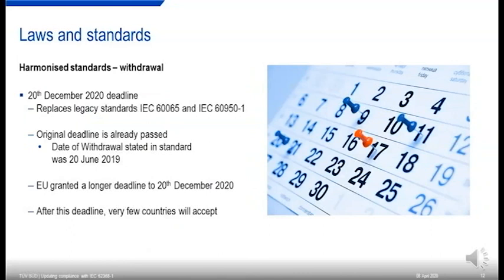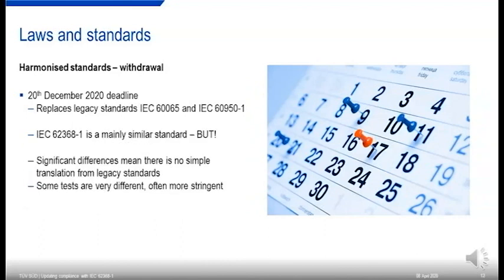The harmonized standards withdrawal is important for everybody. We've got the 20th of December deadline, which means the legacy standards — 60065 and 60950-1 — will be replaced by 62368-1 on the 20th of December 2020. The original deadline already passed; the date of withdrawal published in the standard was the 20th of June 2019. The EU decided that wasn't long enough and granted an extension to 2020. After this deadline, very few countries will accept the legacy standards. Some tests are very different and often more stringent, so beware — there's no simple translation from the old standards.